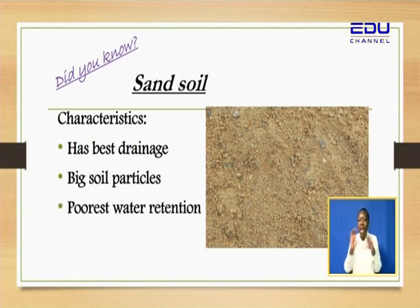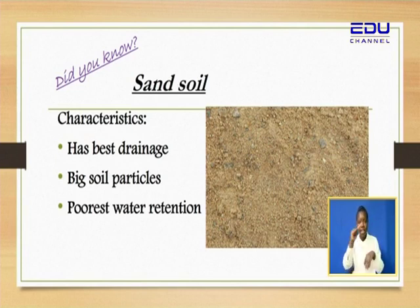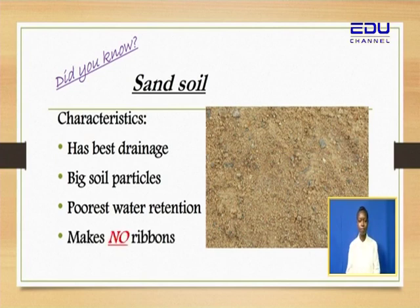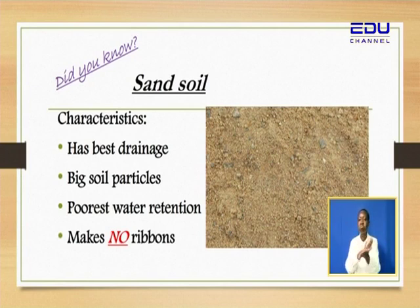Sand soil has the poorest water retention. Clay soil had the best water retention but poor drainage. Now, sand soil has the best drainage but poor retention — it does not hold water. And it makes no ribbons at all.